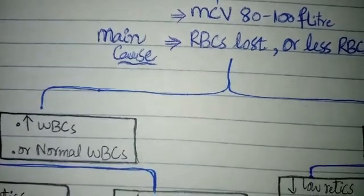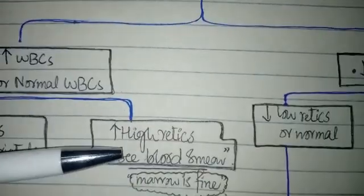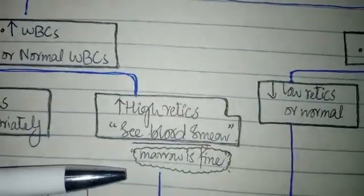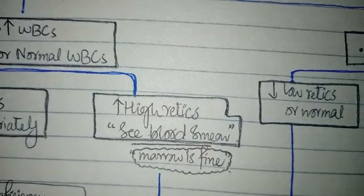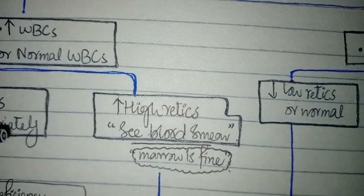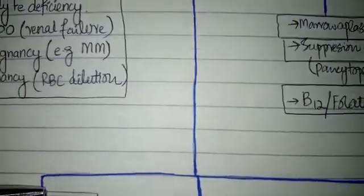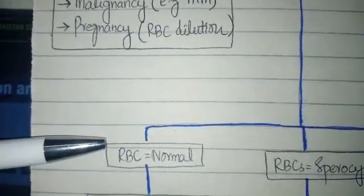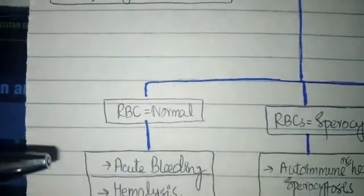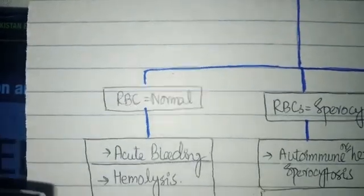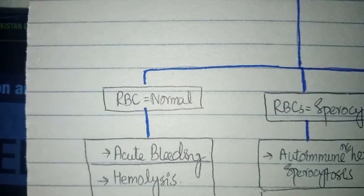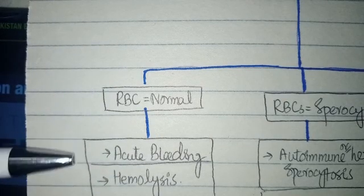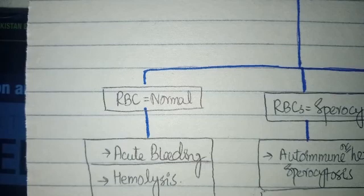If the reticulocyte count is high upon seeing the blood smear, it means that the bone marrow is fine — there is no issue with the bone marrow and other causes exist. We have to check the RBC shape. If the RBC shape is normal, it means that the normocytic anemia is caused by acute bleeding or hemolysis. Acute bleeding can be due to any trauma or accident, while hemolysis can be due to an autoimmune disease.